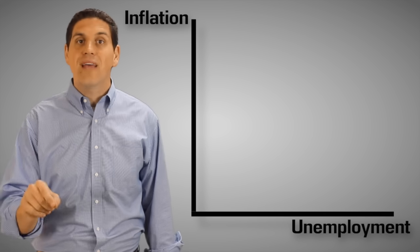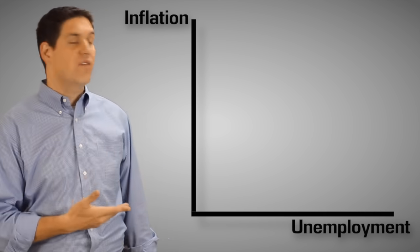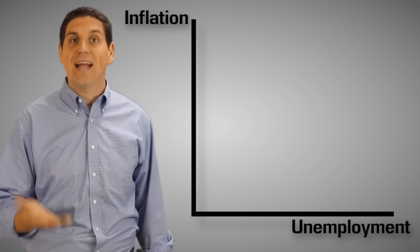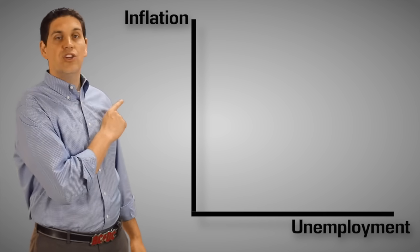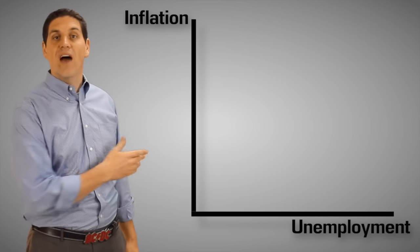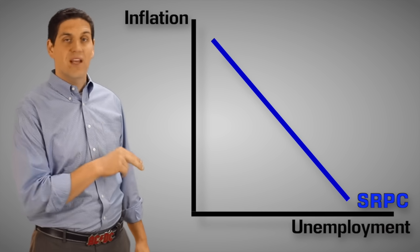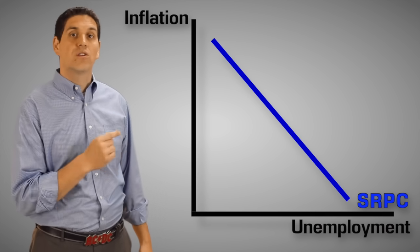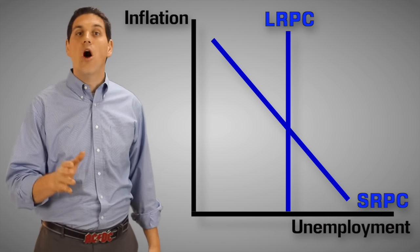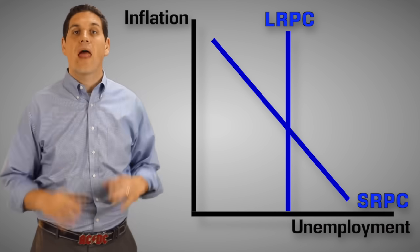Remember, the economy can only be in one of three places at any given period of time: a recessionary gap, an inflationary gap, or at full employment. It turns out that the Phillips Curve shows exactly just that. Up here we have inflation, and down here we have unemployment. In the short run, the Phillips Curve is downward sloping. In the long run, the Phillips Curve is vertical.